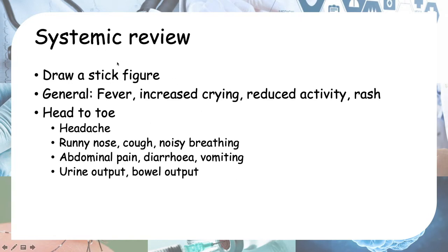Next is systemic review. I like to draw a stick figure so I can see what to ask from head to toe. For general systemic review I ask about fever, increased crying — because a young child cannot tell you when they are in pain, so they show it by crying — irritability when unwell, reduced activity, and whether the parents can see a rash. So my general systemic review covers fever, increased crying, reduced activity, and rash.